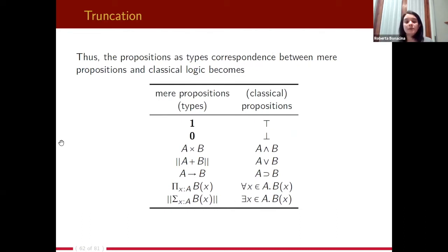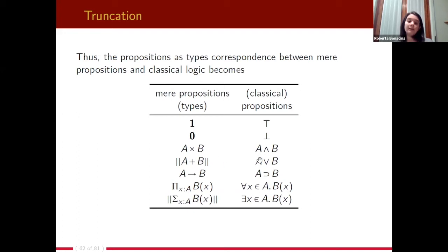This allows us to define a new correspondence — not between all types and propositions, but between those types which are mere propositions and propositions in classical logic. So: 1 maps to truth, 0 to false, product to AND. The truncation of the co-product maps to the classical OR, the arrow is implication, Π is for-all, and the truncation of the sigma type gives the classical existential quantifier.